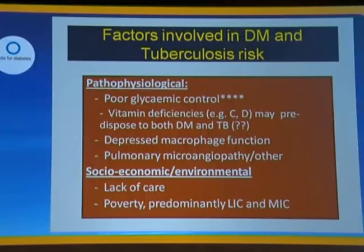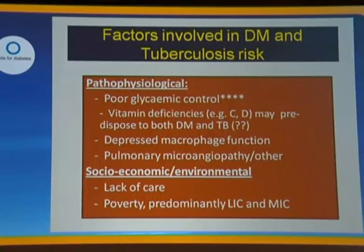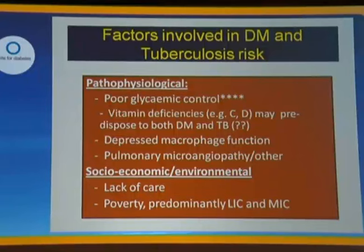The factors involved in tuberculosis risk include poor glycemic control, which is very important. There may be additional factors associated with vitamin deficiencies — there's quite a lot of interesting data relating to vitamin C and D, which may influence both diabetes and tuberculosis. I've talked already about depressed macrophage function. The other issue is microangiopathic complications, which may include microangiopathy in the pulmonary circulation. But there's also the socioeconomic and environmental level: lack of access to care, poverty, overcrowding, and urbanization. The disease is therefore predominantly a problem in lower-income and middle-income countries.